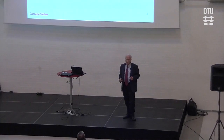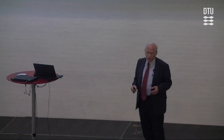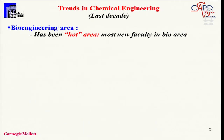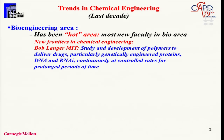What are the trends in chemical engineering over the last decade? Without doubt, one major development has been the emergence of bioengineering. Certainly in the States, and in a good part of the world, it's been regarded as a hot area — a large number of new faculty have been hired. This happened because it opened new frontiers that did not exist before. One example is work by Bob Langer at MIT, who developed polymers to deliver drugs, particularly genetically engineered proteins — so we're talking about drug delivery. Nobody would have dreamt 30 years ago that this would be part of chemical engineering.